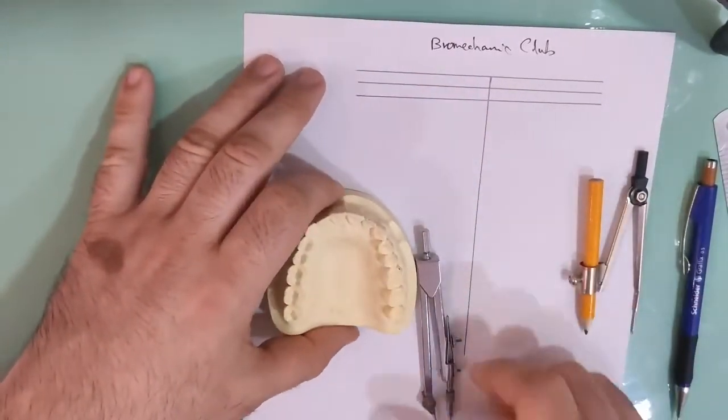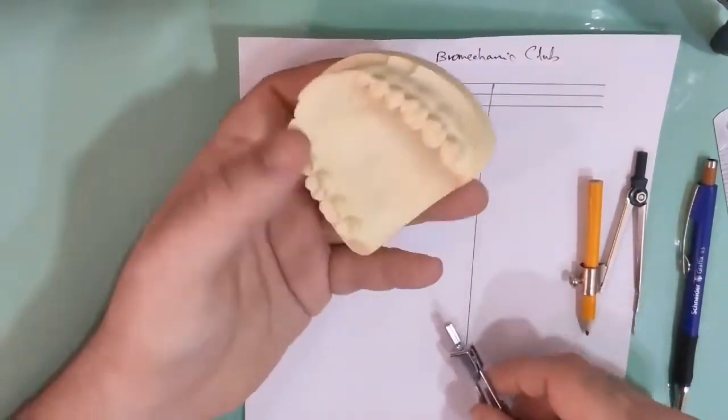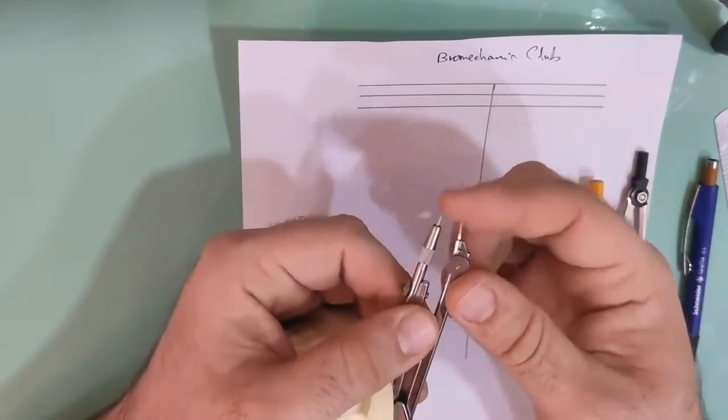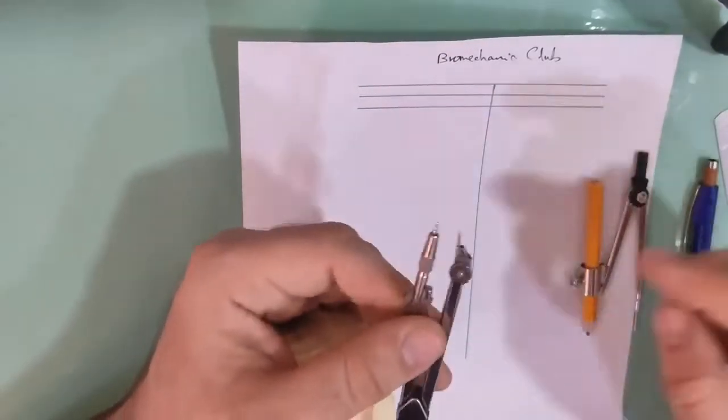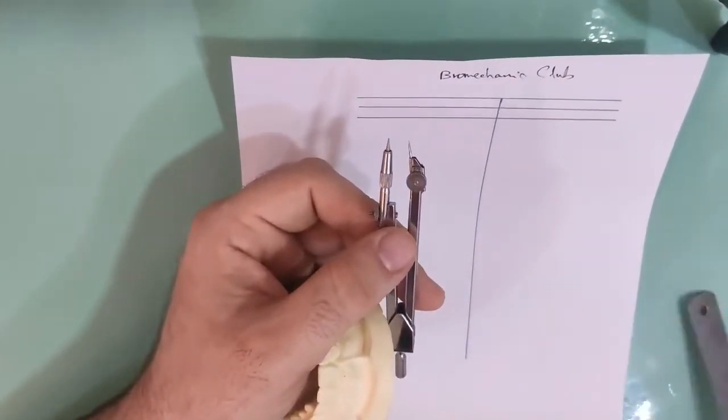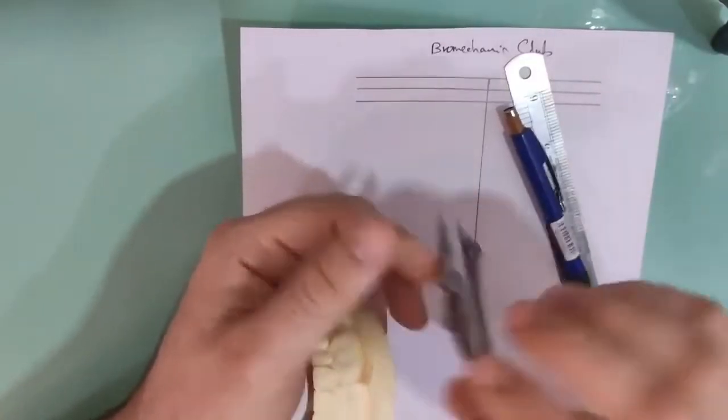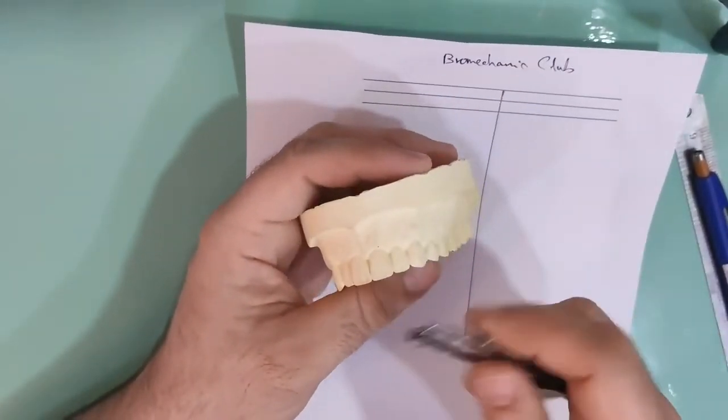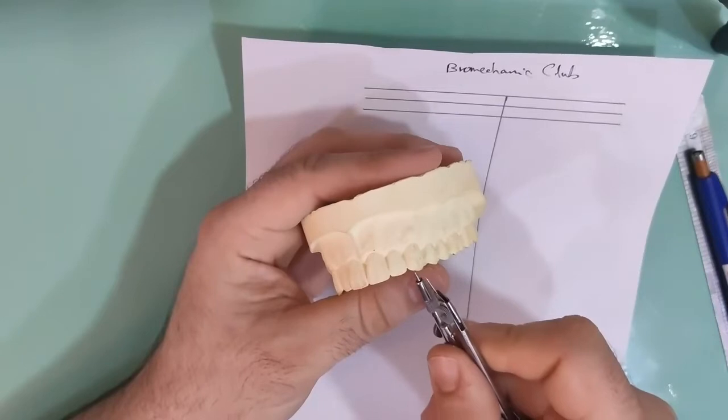So we have the dental cast specials for the patient. We don't want to make this one like this. So we want to make a lot of paper and paper. I take the distal width of central, lateral, and canine.